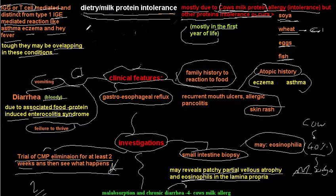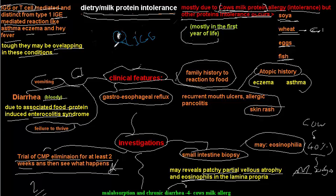Cow's milk protein allergy is most common in the first year of life. When you administer cow's milk to a baby, the milk proteins — one of which is casein — are recognized by intestinal IgG or T-cells as foreign bodies. These immune cells attack the protein, leading to allergy and effacement of the intestinal villi.